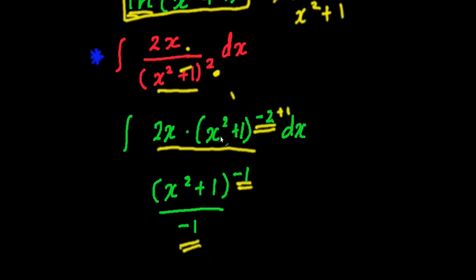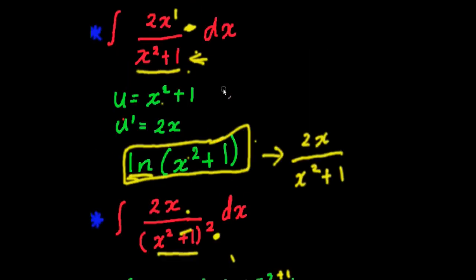Okay, so the difference between this question and the last question that we did was over here, this entire polynomial wasn't raised to the power of anything. Over here, the polynomial is raised to the power of 2. So if you see a polynomial raised to the power of something, then it's going to be something like this. If it's simply just a polynomial without any power, then it's probably going to be a log.